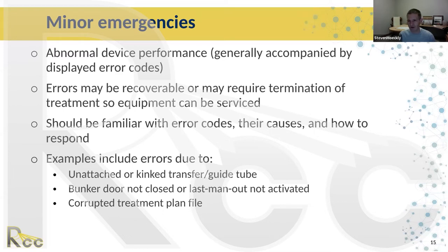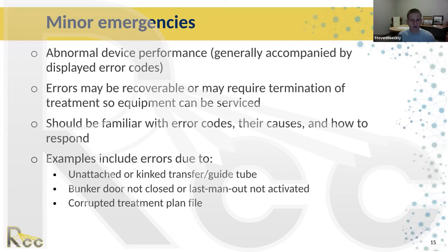Minor emergencies include abnormal device performance or error codes — these may be recoverable with a computer restart, or may require service. You need to be familiar with the error codes; your vendor should provide manuals. If buying from a third party, contact the vendor for manuals or reach out to someone with the same unit. Minor alarms can include errors from kinked transfer tubes, guide tubes that are unattached, the bunker door not being closed, or the last man out switch not being activated.